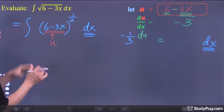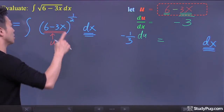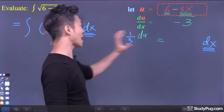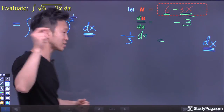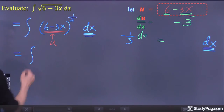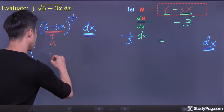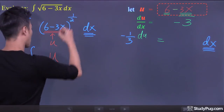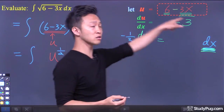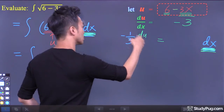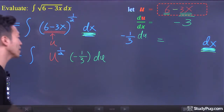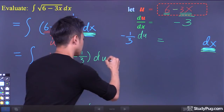We are now ready to convert the integral originally expressed in terms of x to a brand new integral completely expressed in terms of u. So the integral of 6 minus 3x is just u to the power of 1 over 2. And dx expressed in terms of u is just negative 1 over 3 du.